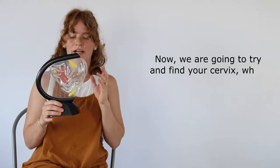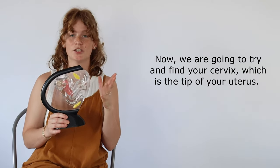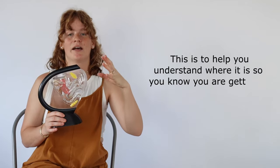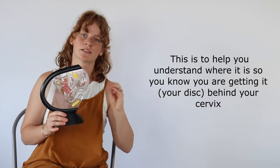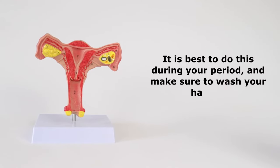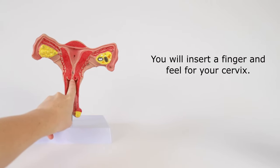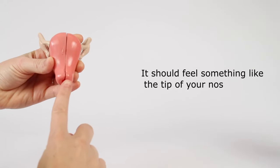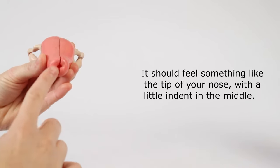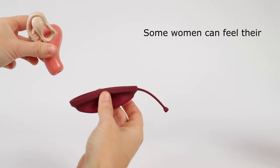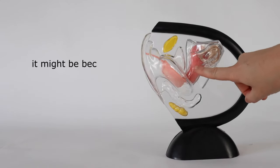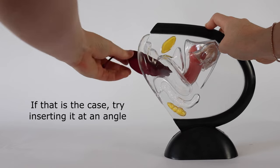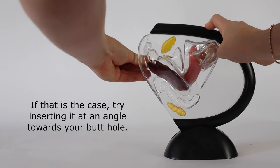Now we're gonna try to find your cervix which is the tip of your uterus and this is just to help you understand where it is so you know if you're getting it behind your cervix. You will insert a finger and feel for your cervix. It should feel something like the tip of your nose with a little indent in the middle. Some women can feel their cervix so if you're inserting your disc and it hurts it might be because you're hitting your cervix. If that is the case try inserting it at an angle towards your butthole.